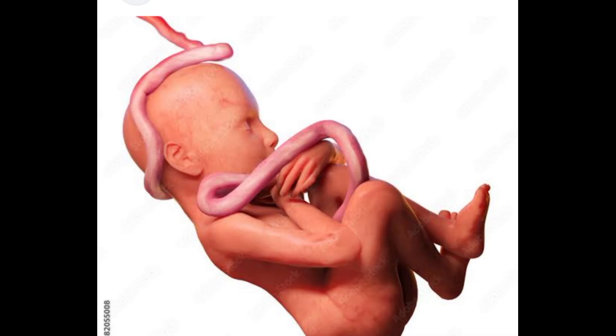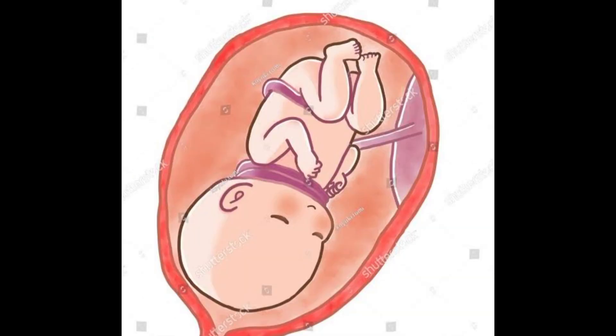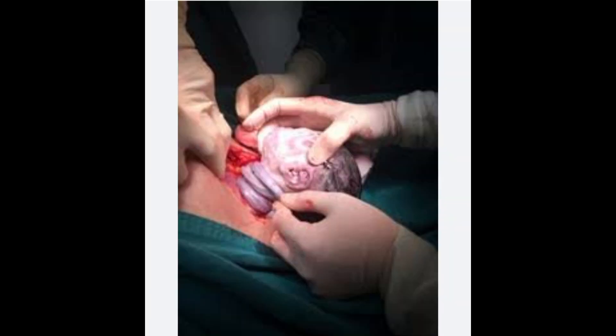Cord around the neck is very common in pregnant ladies, and this is an important phenomenon that can result in growth retardation of the fetus. You can see from the pictures there is a loop of cord around the neck in the baby during pregnancy.